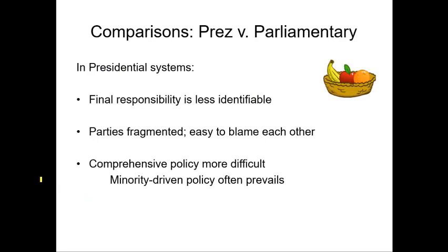In presidential systems, final responsibility is less identifiable. The president can blame Congress, Congress can blame the president, and they can let the courts handle it with a ruling that strikes down a law. So there's a lot of finger-pointing and potential for things not to get done in this separation of powers system. The parties are also more fragmented in the presidential system — we currently have a severe polarization between the two parties, where they are gridlocked most of the time, and Congress's approval ratings are at all-time lows.